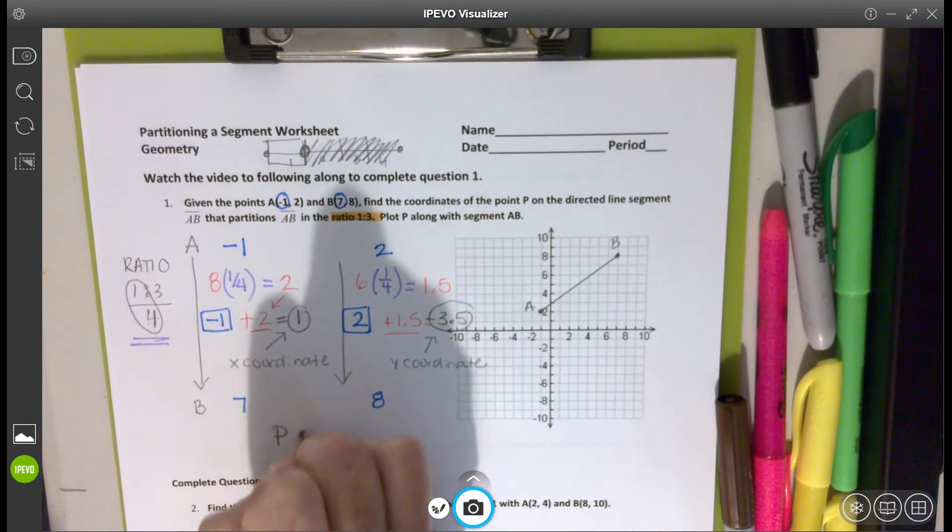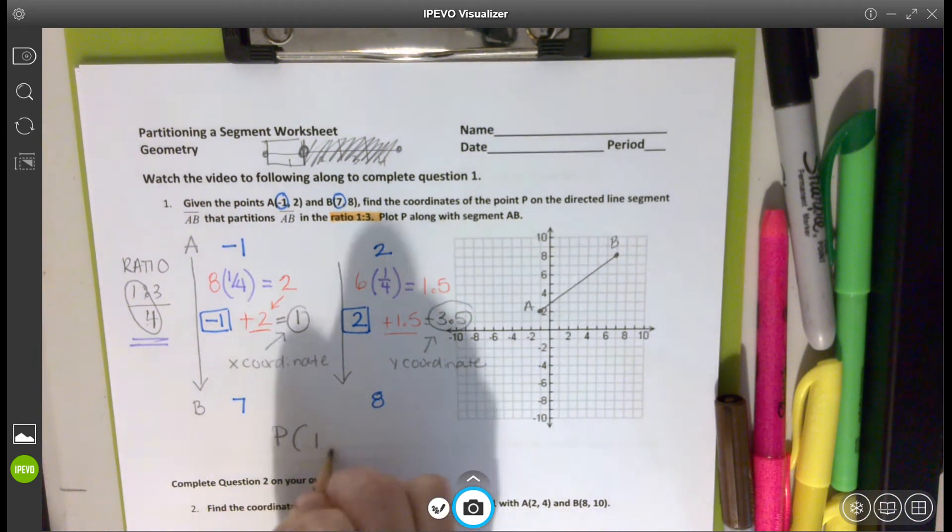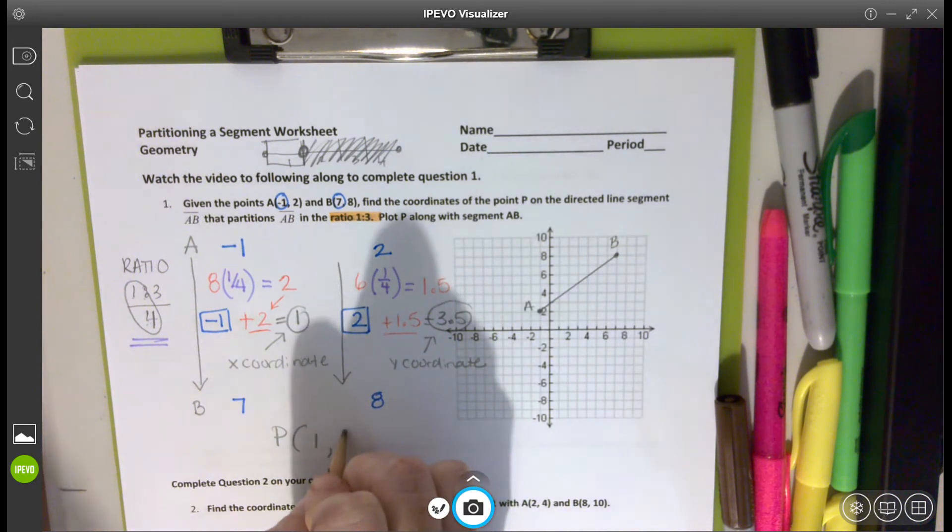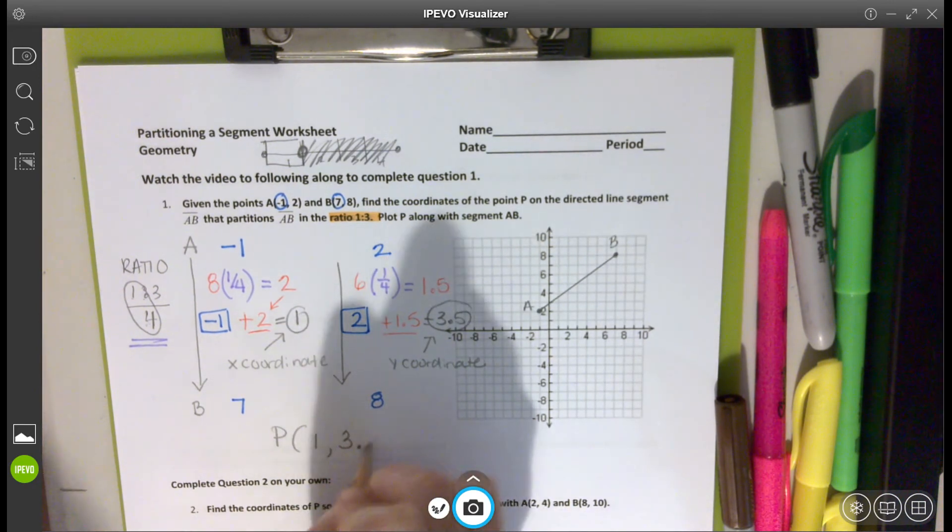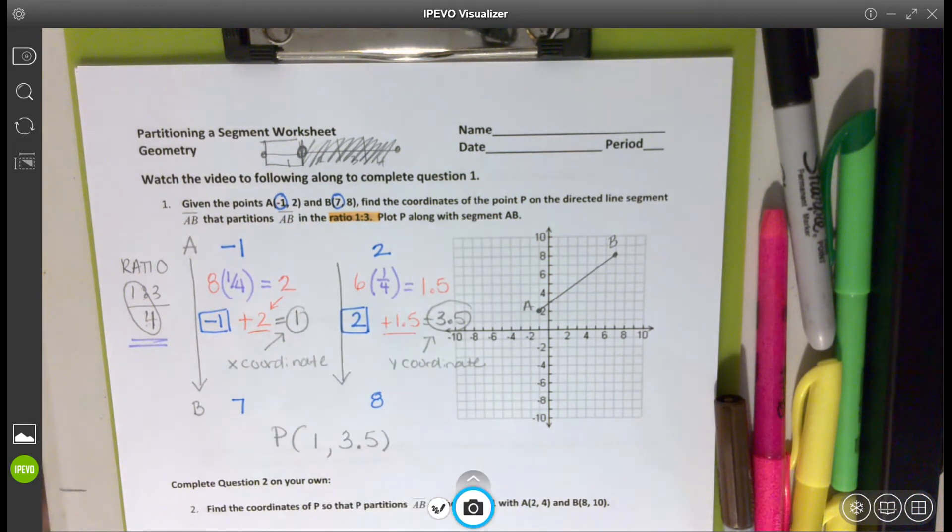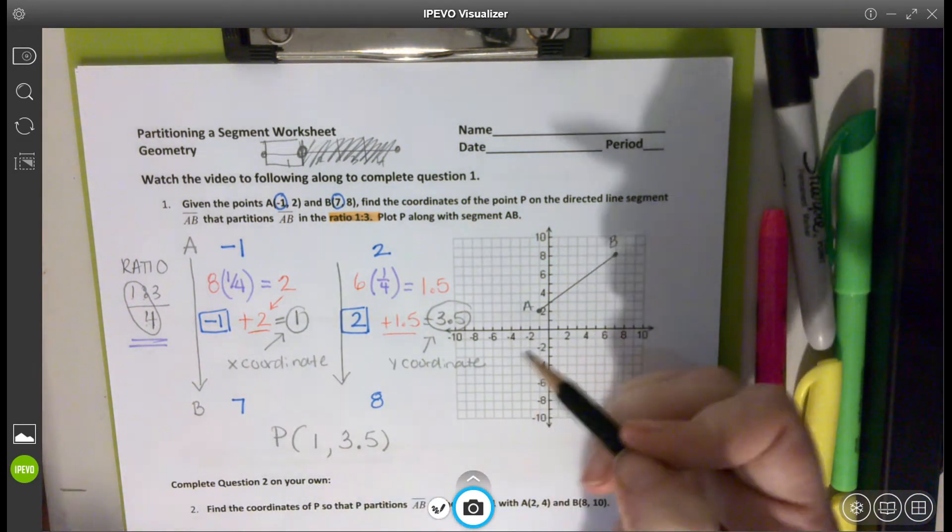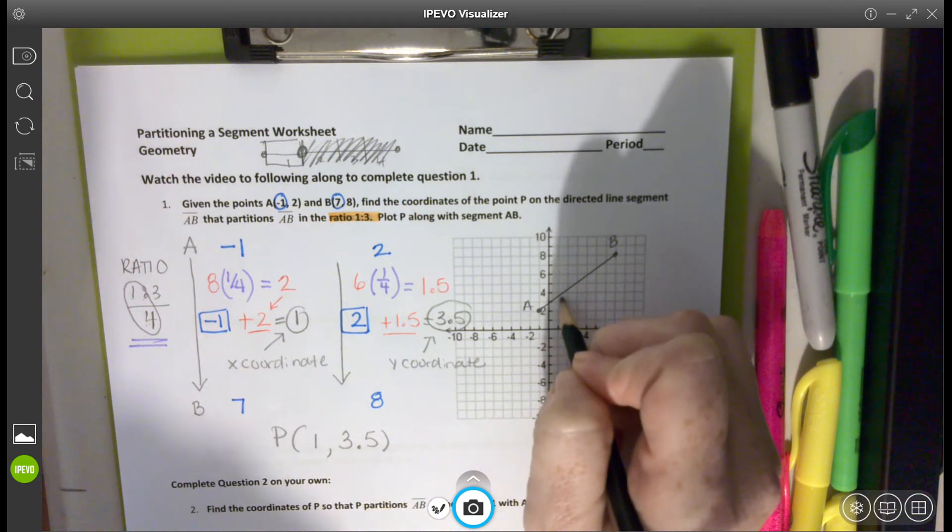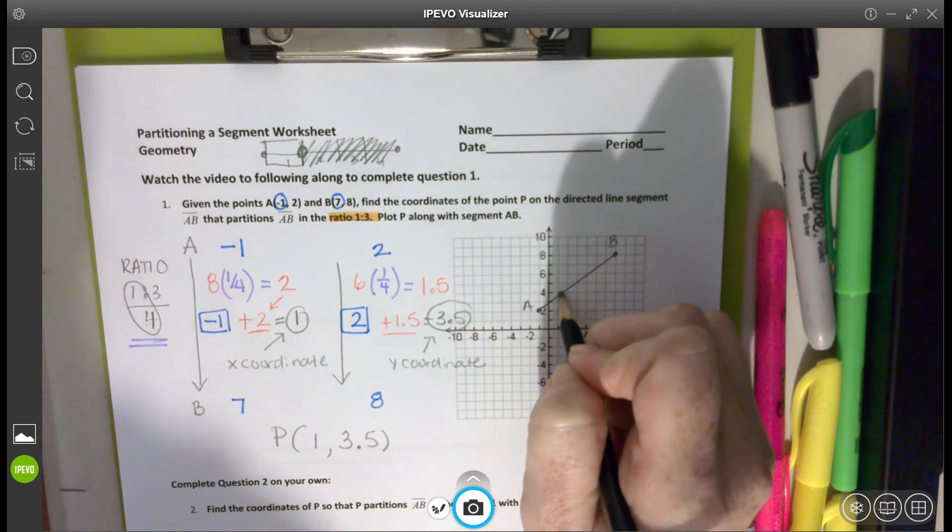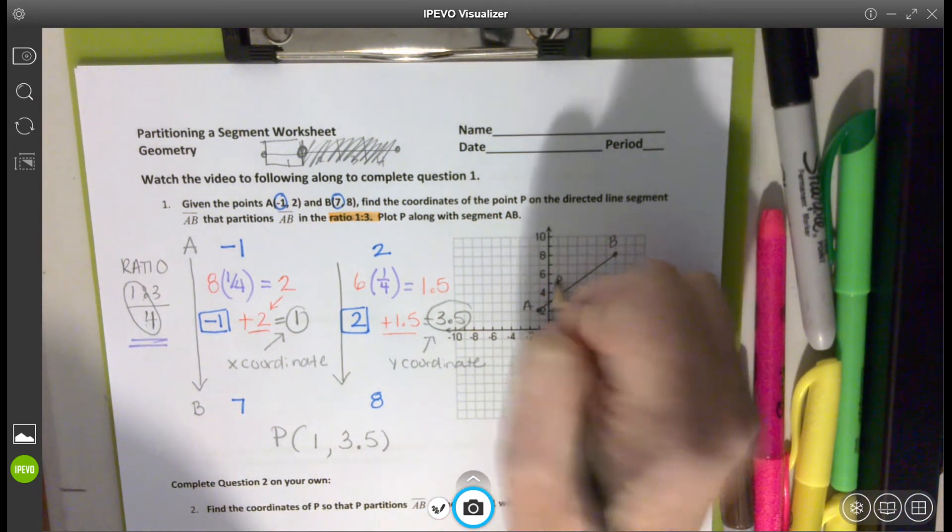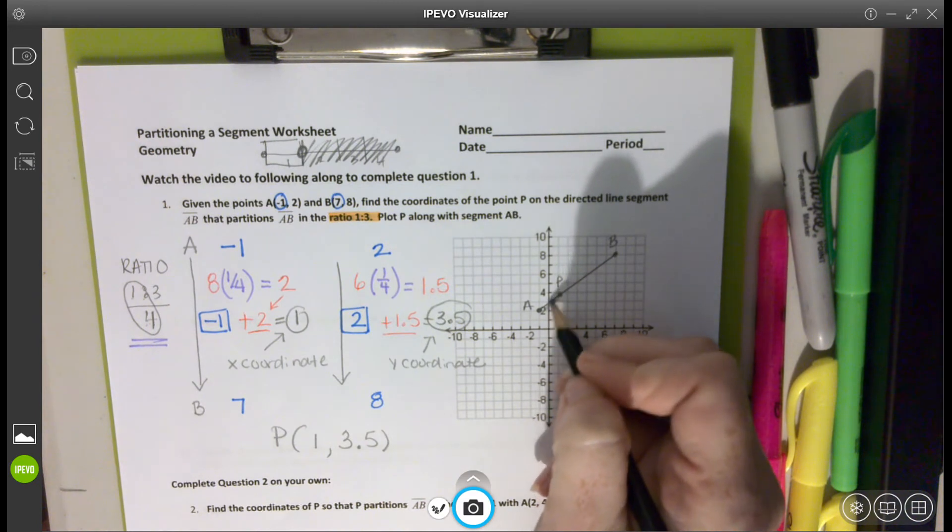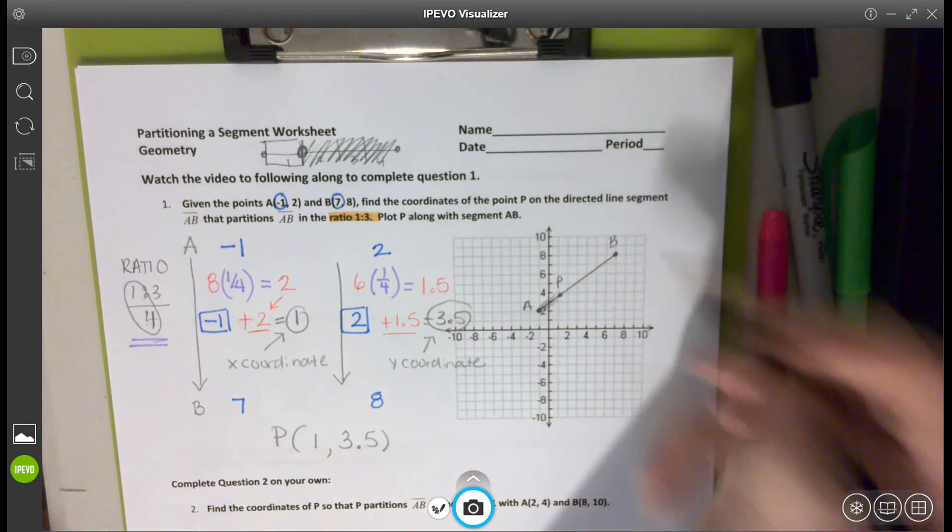So P, that new point that will make this true from the ratio of one to three, is one comma 3.5. All right, now plotting it on our coordinate plane, we go to one, and right about here to the best of our abilities for plotting, 3.5, and label it P. And looking at that graph, you can see here's that one piece to three.